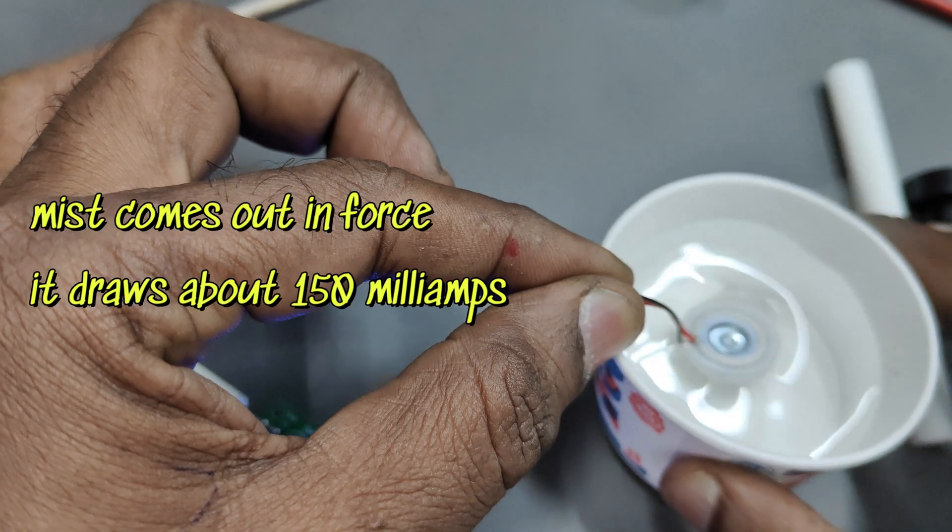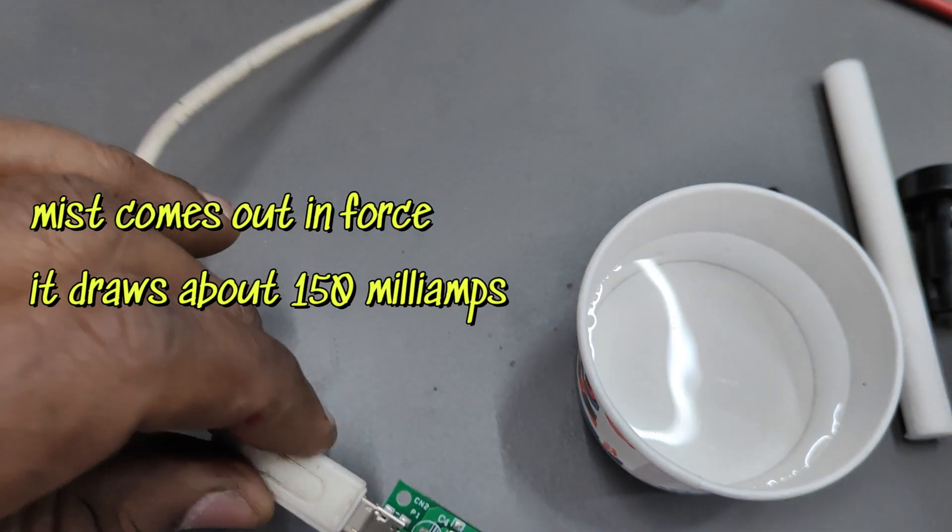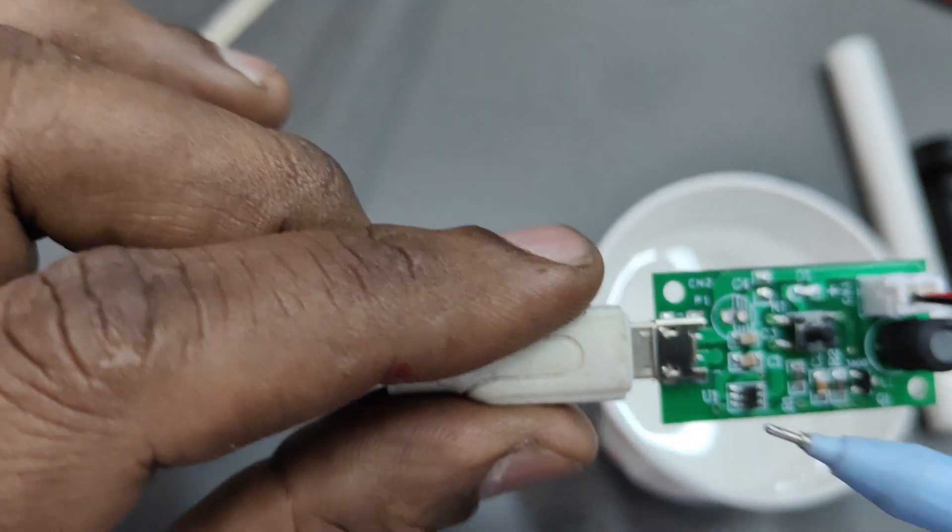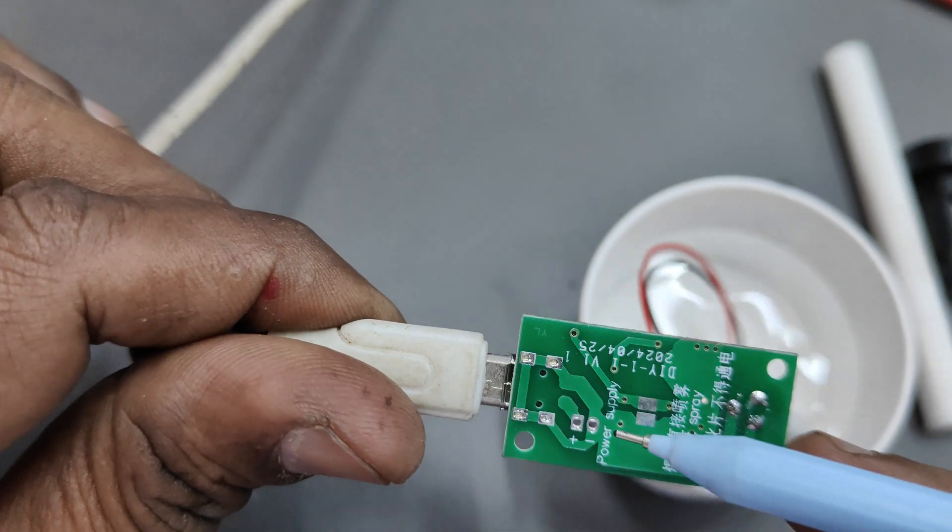Place the plate on the water. You can see the fumes, that is a burst of mist, and it takes only about 150 milliamps.